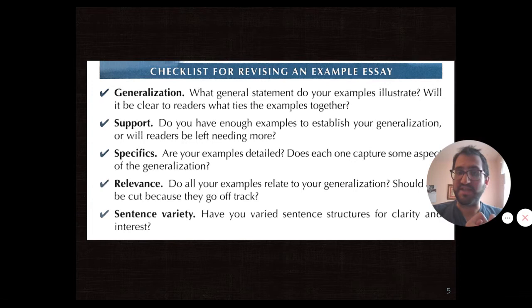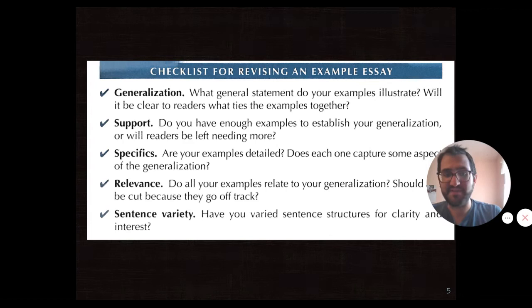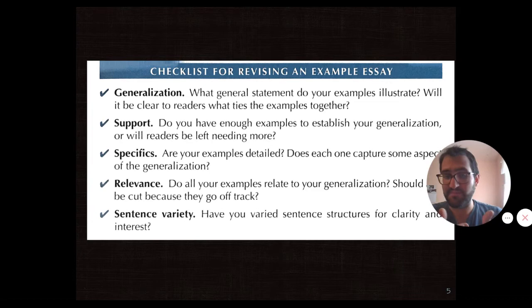Here's a checklist of some things you want in an example essay. You want to make sure that your general statements are illustrative of your example. It needs to be clear to a reader. You have to provide support. You have to make sure you're specific enough. Is it relevant to the reader? Is the example you're giving going to help connect people more? And do you have sentence variety?